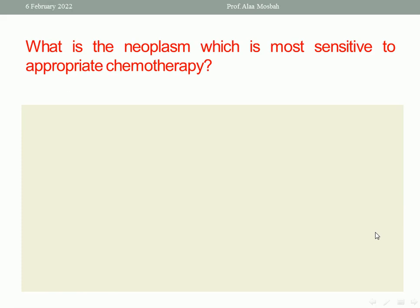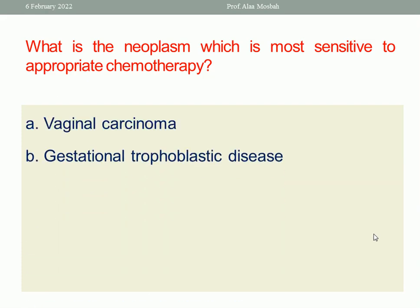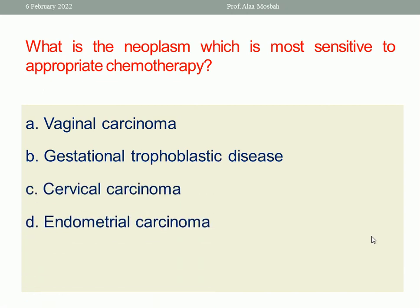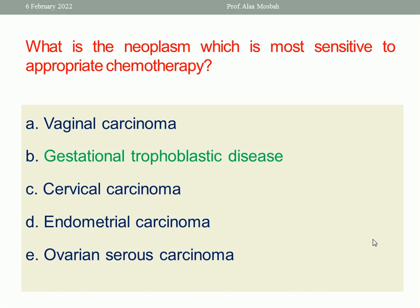Next question: what is the neoplasm which is most sensitive to appropriate chemotherapy? Options: vaginal carcinoma, gestational trophoblastic disease, cervical carcinoma, endometrial carcinoma, or ovarian serous carcinoma? Of course, gestational trophoblastic disease is the most sensitive to chemotherapy.